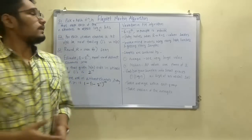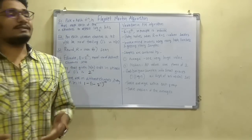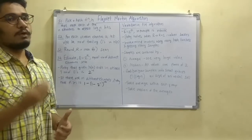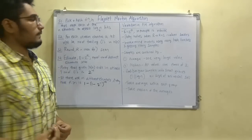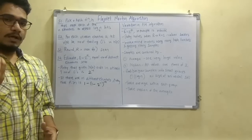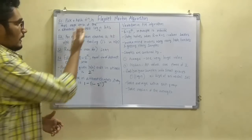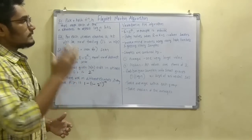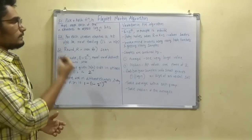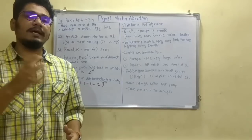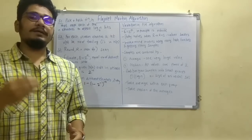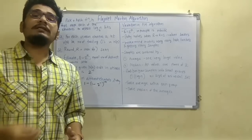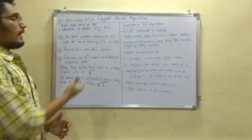The name Flajolet-Martin basically comes from its creators, Philip Flajolet and G. Nigel Martin. To get started, there are four basic steps for the FM algorithm for counting distinct elements in a stream. First, we pick a hash function H. This hash function maps each of the n elements to at least log n bits, which is useful for converting elements into binary format, since stream data usually consists of bits — zeros and ones.